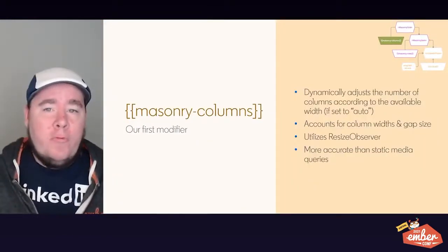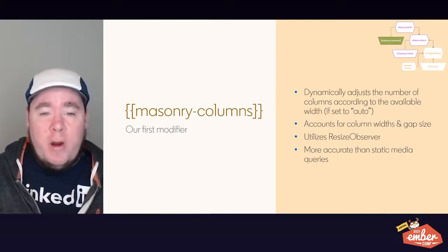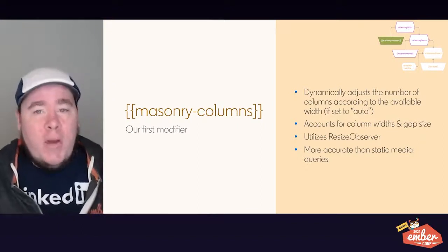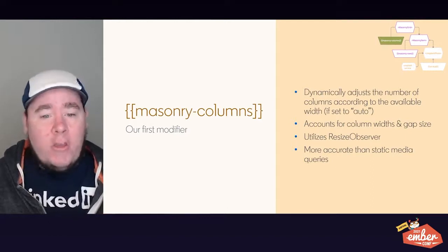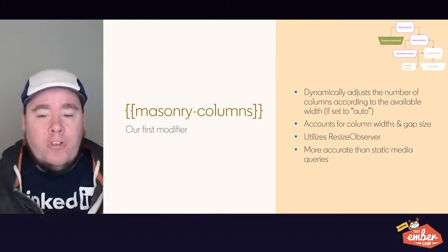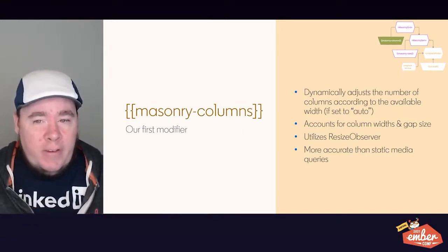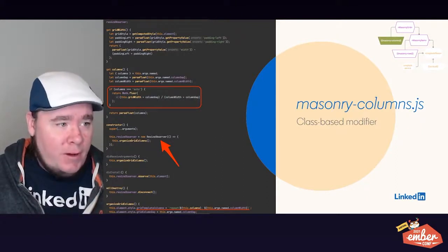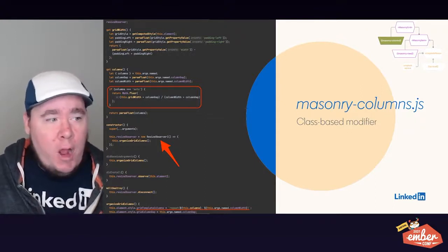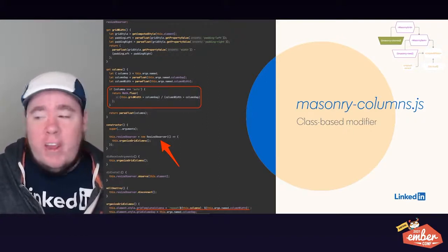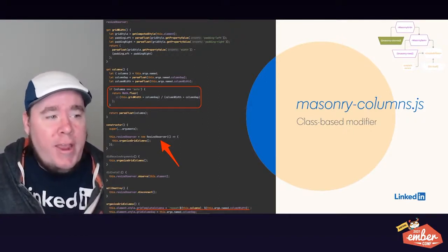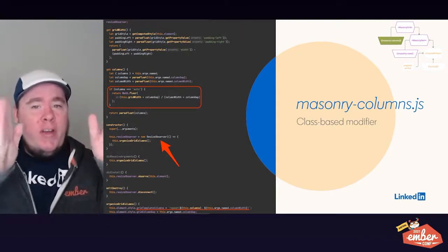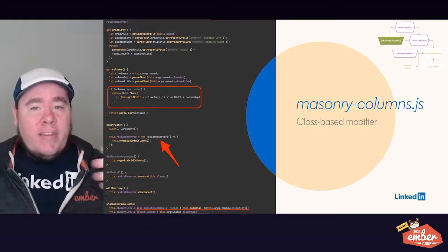Our first modifier is masonry-columns. It dynamically adjusts the number of columns in our grid, accounts for column width and gap size when calculating available columns, and updates the column count automatically using ResizeObserver — which is more accurate than static media queries with preset breakpoints. Looking at the implementation, this is a class-based modifier with getters for grid width and column count. The calculation divides the container width by the column width plus gap to determine how many times that space can repeat before exceeding the container size.